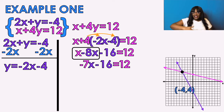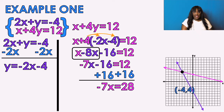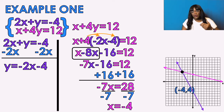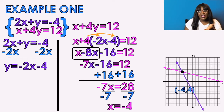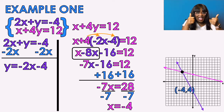I bring everything else down and isolate X. Adding 16 to both sides gives negative 7X equals 28. Dividing by negative 7 on both sides, I get X equals negative 4. We already knew that from the graph, so I know I'm doing it right.